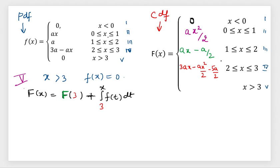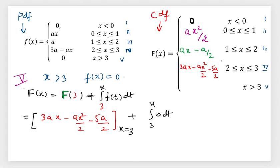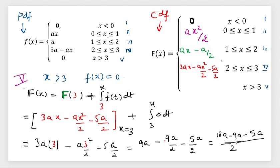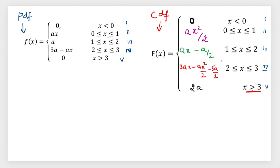For the last interval, x greater than 3, there is no function, so there is no integration. We only plug in x equals 3 into the previous CDF. After substituting x equals 3 and simplifying, we get 4a/2, which equals 2a. So when x is greater than 3, the CDF is 2a.